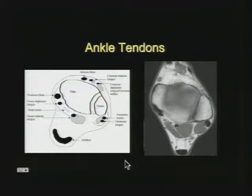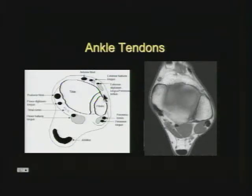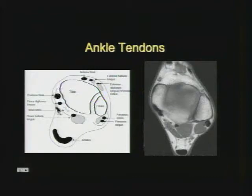There are ten tendons that traverse the ankle to act on the foot. We have mnemonics for some of them. The flexor compartment uses 'Tom, Dick and Harry,' and the extensor compartment uses 'Tom, Harry and Dick.' Remember there's also a peroneus tertius in the extensor compartment going to the base of the fifth metatarsal. The retinaculum over the flexor compartment contains the tibial nerve — this is also called the tarsal tunnel.